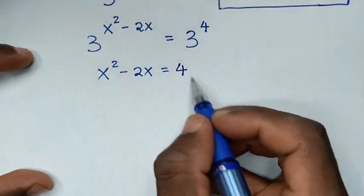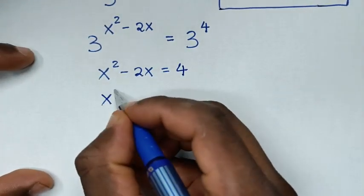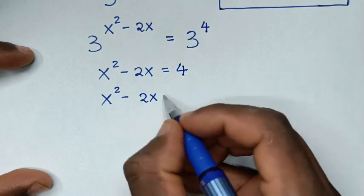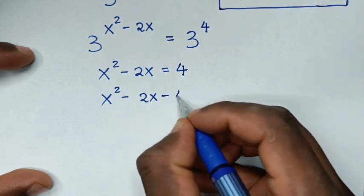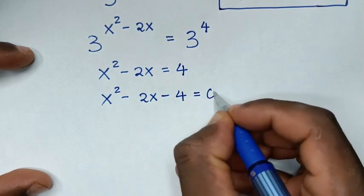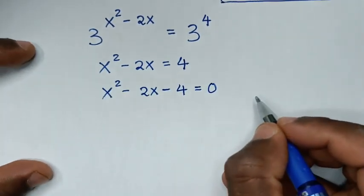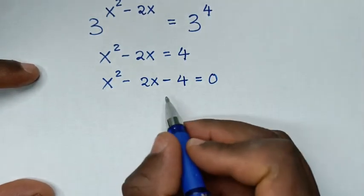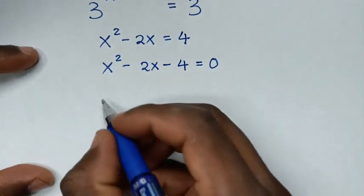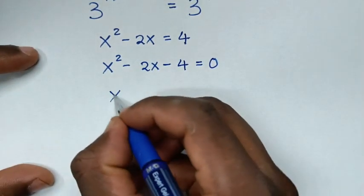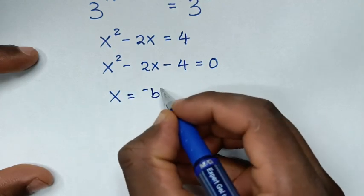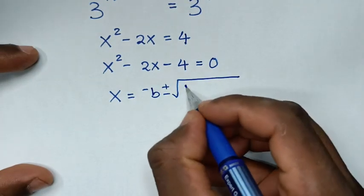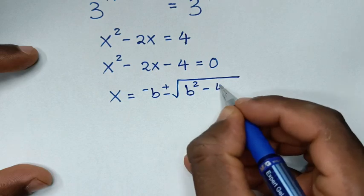We take 4 to the left side, so it will be x square minus 2x minus 4 is equal to 0. Now for this quadratic equation, we'll solve it using the quadratic formula, which is x equals negative b plus or minus square root of b square minus 4ac, over 2a.